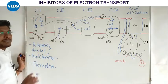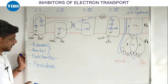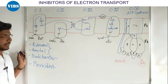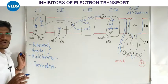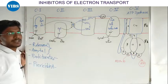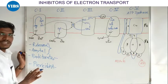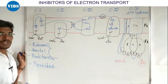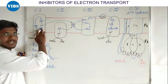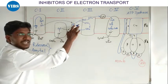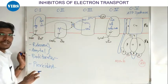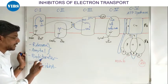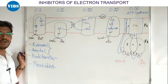Piericidin A ka mode of action alag hai. Piericidin A yaha par compete karta hai is mobile electron carrier ke saath — Piericidin A compete karta hai ubiquinone ke saath. Isse kya hota hai, jab bhi electron transport hote hai from iron sulfur centers, woh ubiquinone ke paas nahin jaate, woh Piericidin A ke paas aate hai. To Complex I ke inhibitors hain: Rotenone, Amytal, Barbiturates, and Piericidin A.